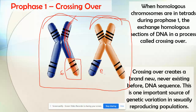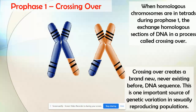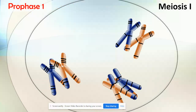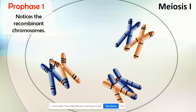Crossing over is absolutely beautiful at creating variation in our offspring. Still in prophase I, notice the recombinant chromosomes — this result of crossing over. We call these recombinant chromosomes because they've recombined.